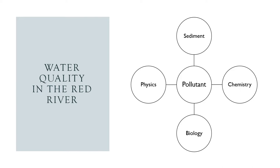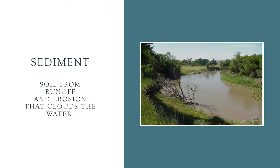Moving on from water quantity issues, let's look at some of the current water quality issues in the river. We will start with one of the more common features that can be found in the river, which is partially caused by the relative youth of the river: sediment.